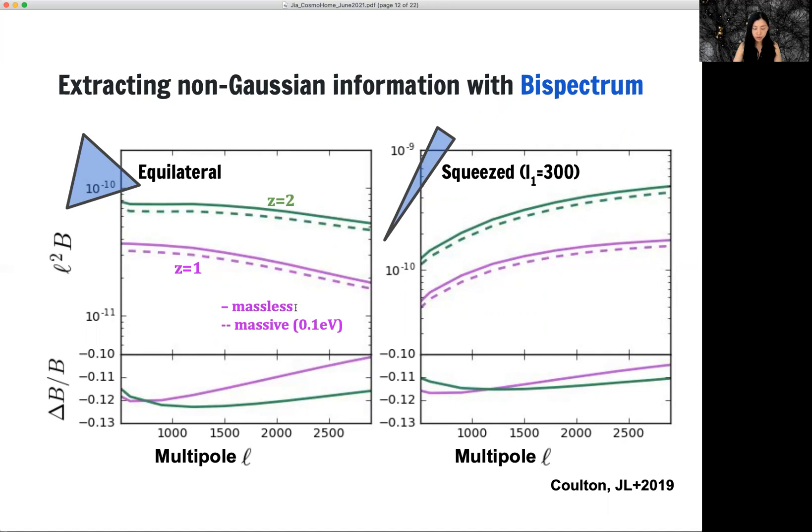And they are also sensitive to neutrino mass. I'm showing you zero neutrino mass and 0.1 EV. And on the bottom panel is the suppression on the bi-spectrum due to massive neutrinos. It is about 10% level 4.1 EV neutrino.